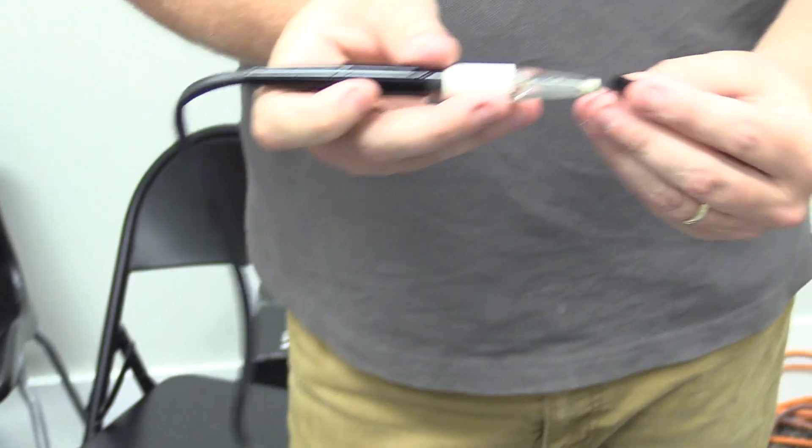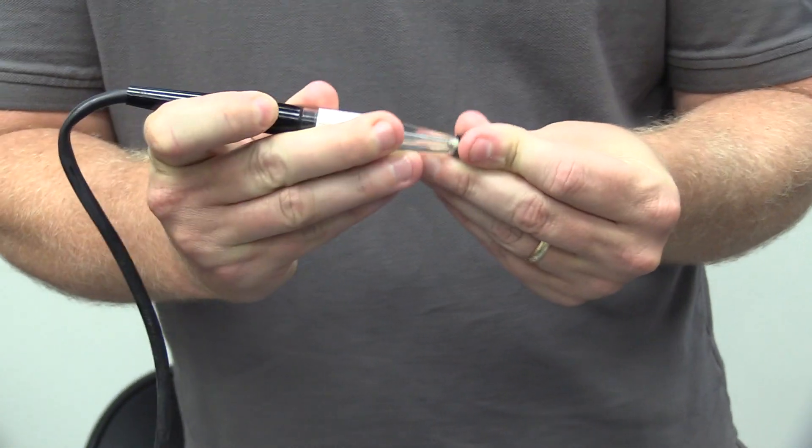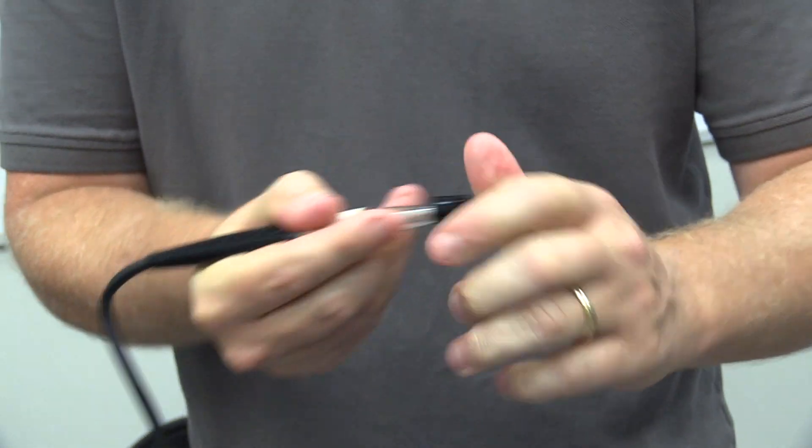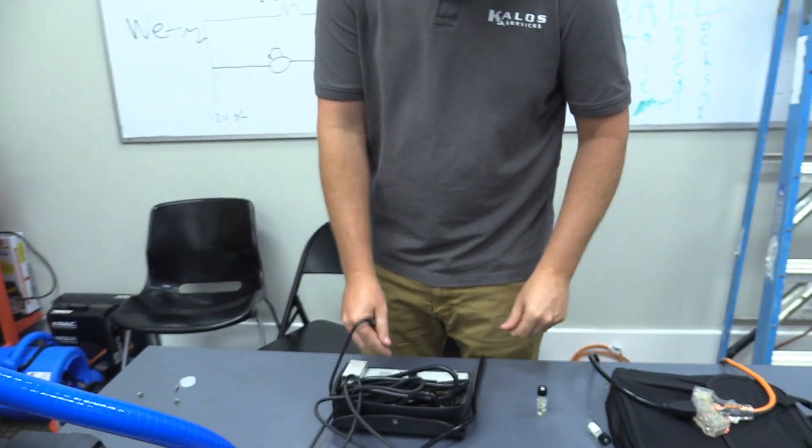You should leave these on your leak detector if you have one of these Bacharach leak detectors anyway, because it helps prevent you from sucking water up in the first place. It has this little air gap here on the side that prevents moisture from coming in. So now we're going to go ahead and hook her up and see how she do.